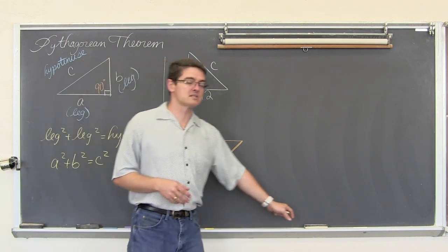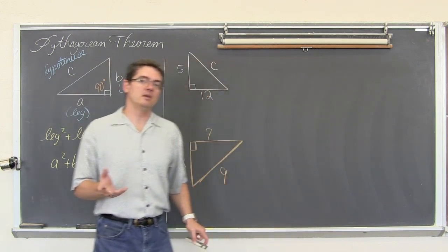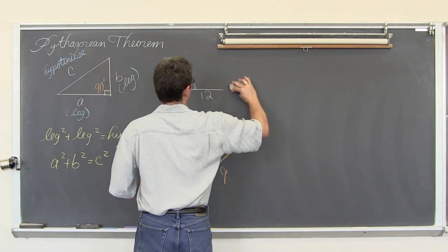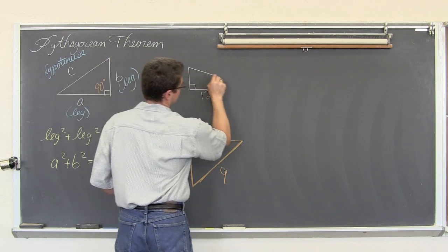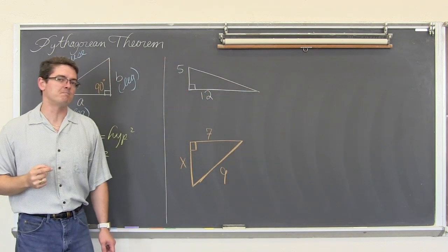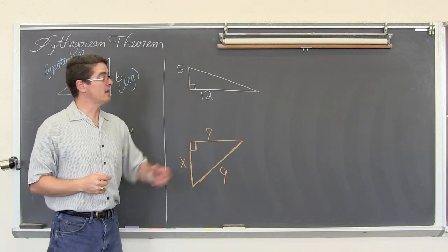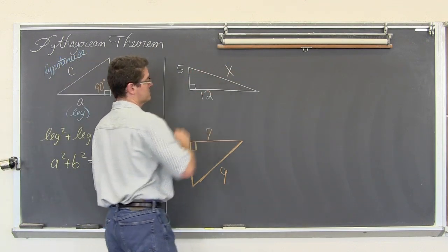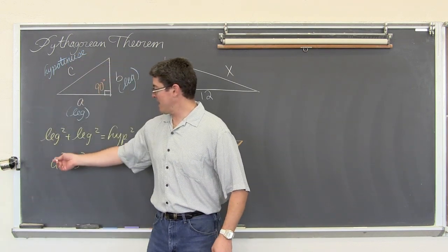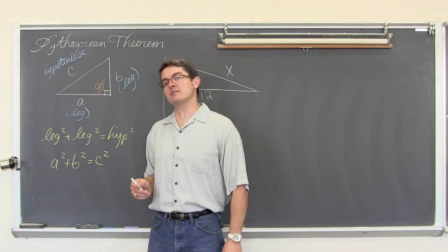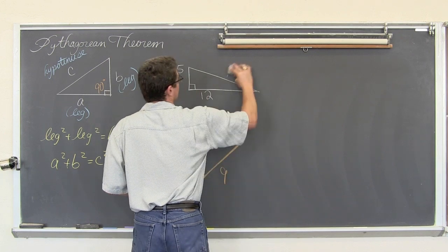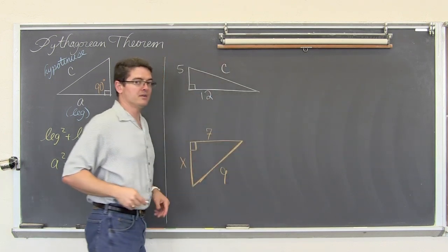Most of the time when you take standardized tests like the SATs, it would say 'not drawn to scale.' Five is much shorter than twelve, so the diagram should look a bit different. We know the two sides that make the right angle and we are looking for the hypotenuse, which we will label c. A variable is just a letter that represents an unknown numerical value — it really does not matter whether you call it a, b, c, d — but a and b are marked off as the legs and c is the hypotenuse.